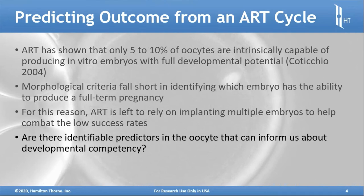We can roll this back before the embryo and begin to ask the question: are there identifiable predictors in the oocyte that can inform us about this potential for developmental competency?